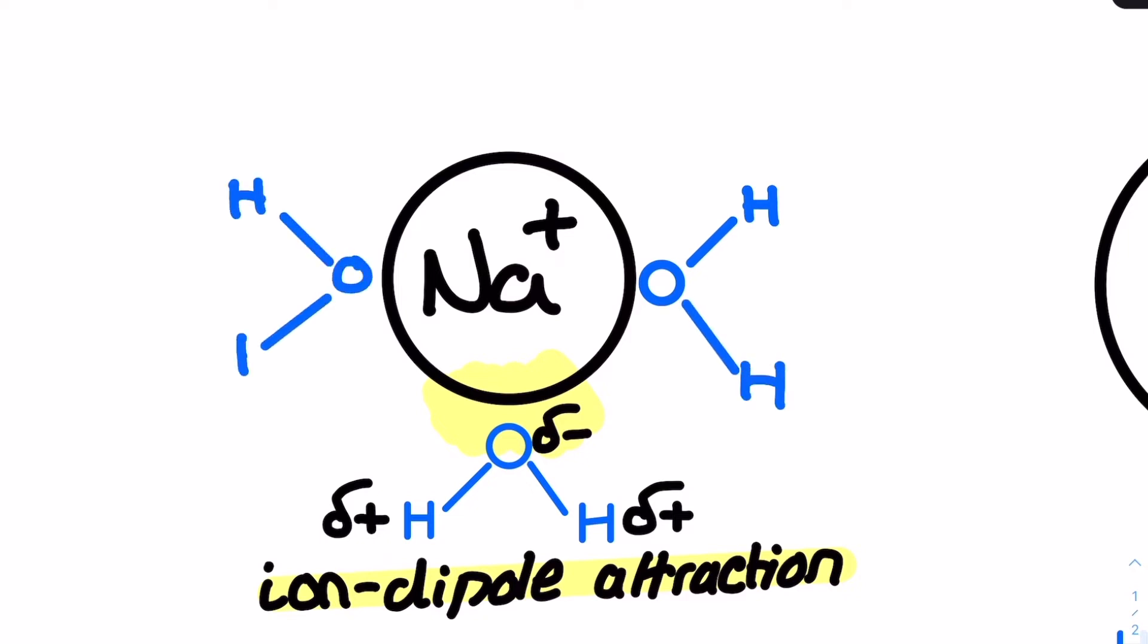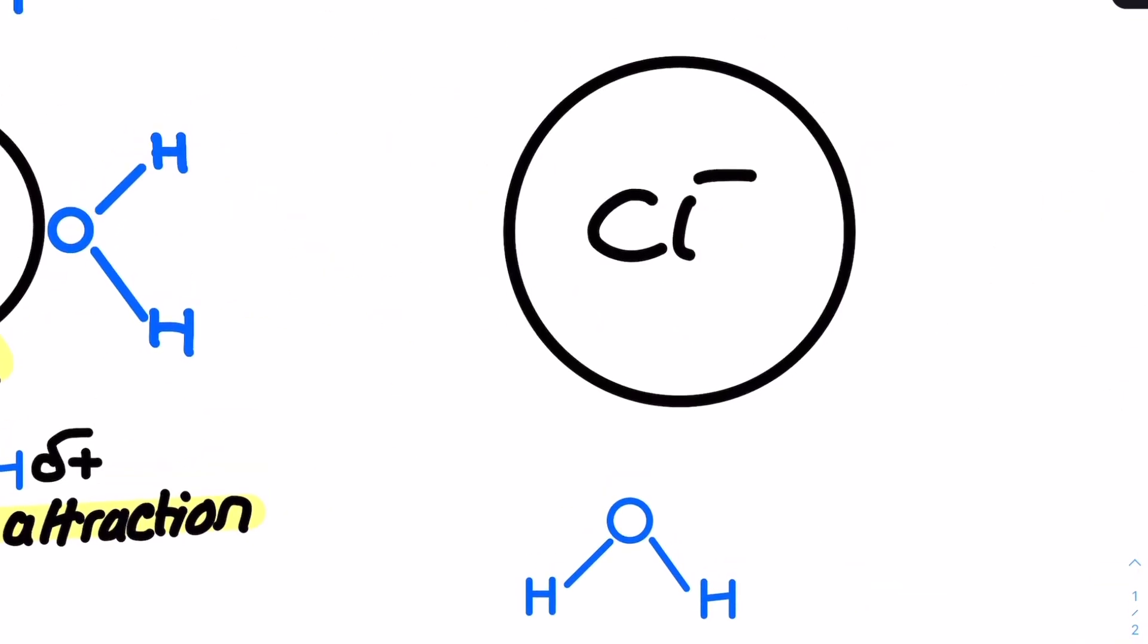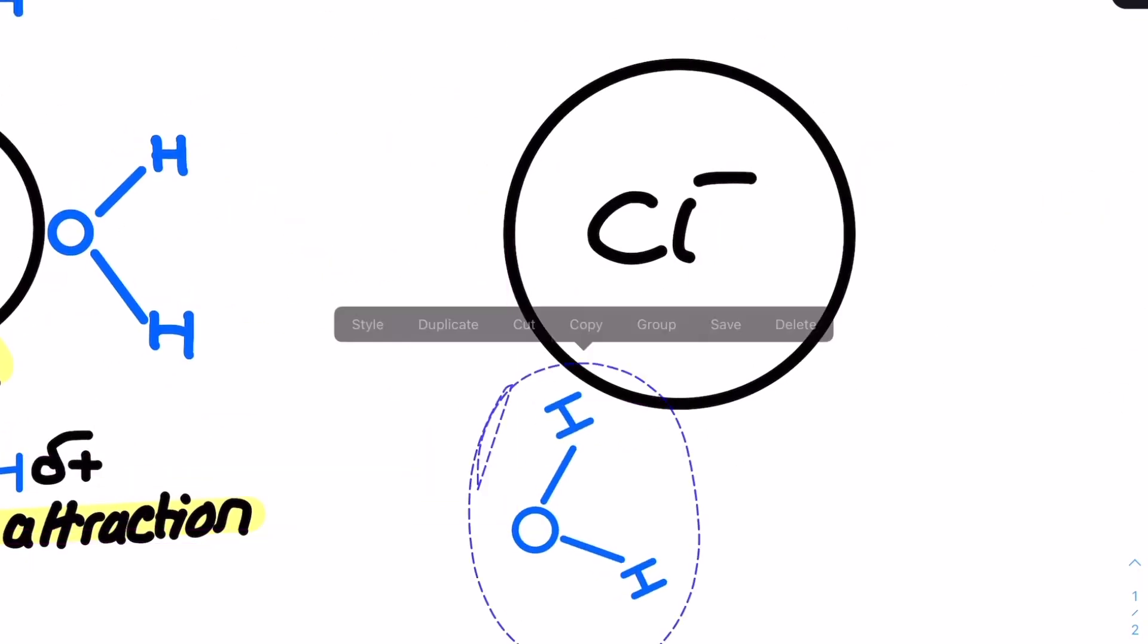For some metal cations this will actually be a dative covalent bond which I think is an excellent link to the transition metals topic in the second year of your OCR-A chemistry A level.